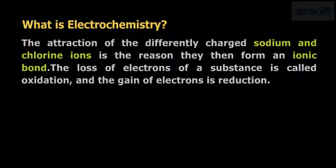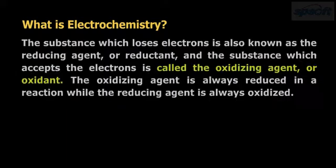The loss of electrons of a substance is called oxidation and the gain of electrons is reduction. The substance which loses electrons is also known as the reducing agent or reductant, and the substance which accepts the electrons is called the oxidizing agent or oxidant. The oxidizing agent is always reduced in a reaction while the reducing agent is always oxidized.